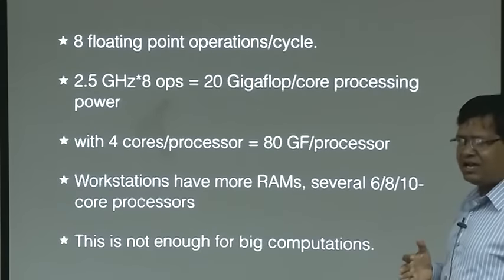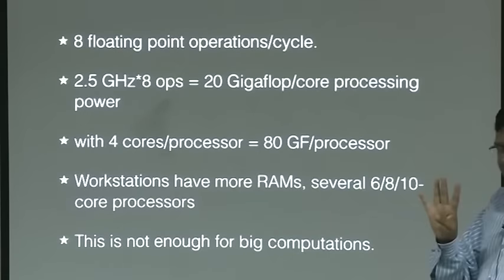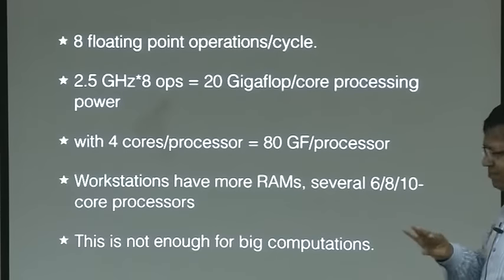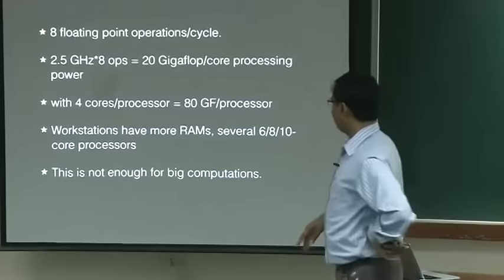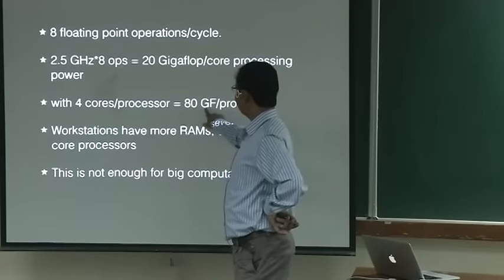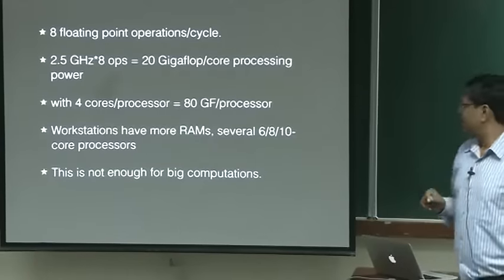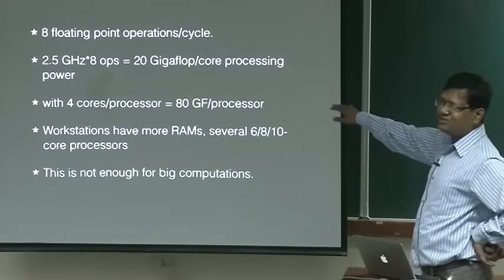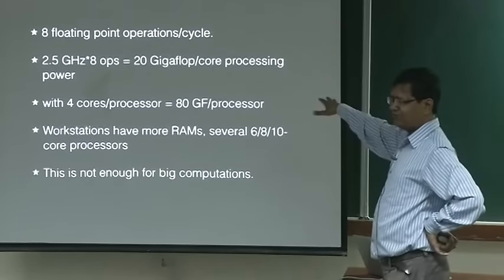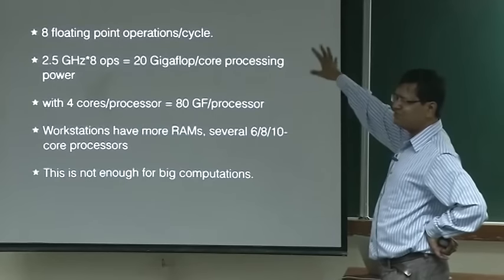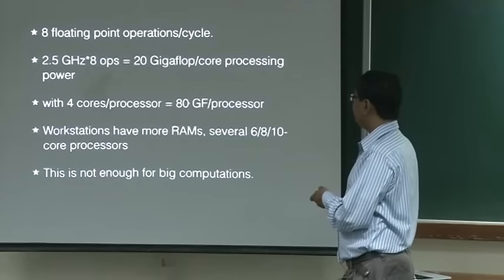How many cores does a desktop computer have? Typically you get a quad-core machine — quad means 4 — so 4 cores per processor. If you have a laptop with a quad-core processor, it can do 80 giga-FLOPS. That is 80G floating point operations per second. But it turns out this is not enough for the computing we need — for advanced computing, this is really small. Though it is huge power, I mean this is really big power, it is still insufficient for big problems.